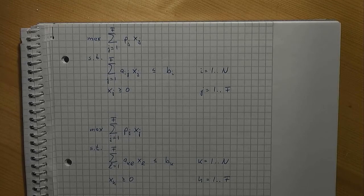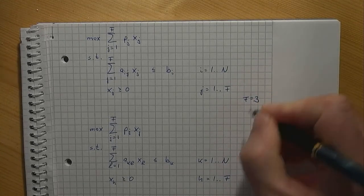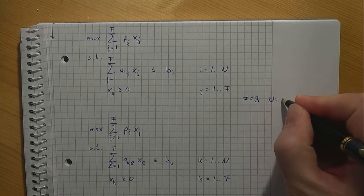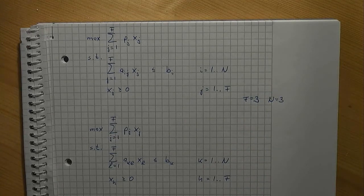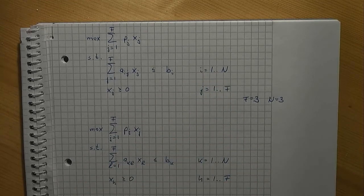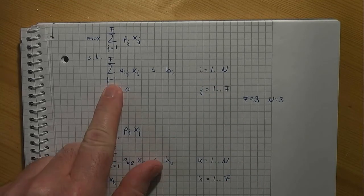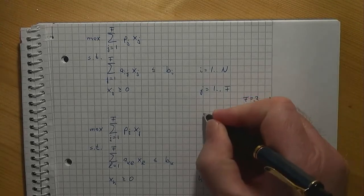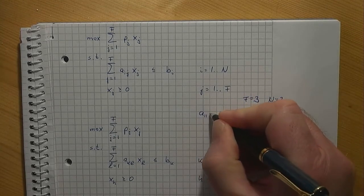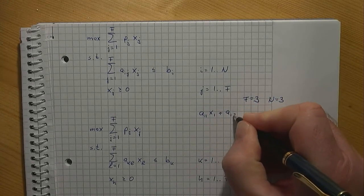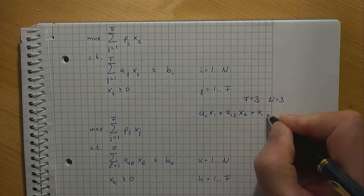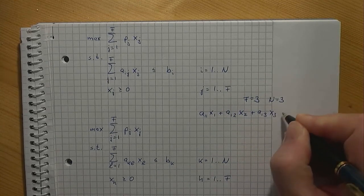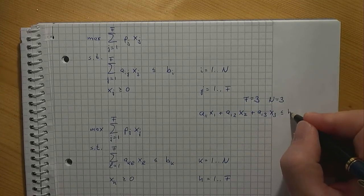Suppose that we have f equals three furniture types and n equals three part types. In the first model if i equals one and j runs from one to three, we get a11 x1 plus a12 x2 plus a13 x3 is less than or equal to b1.